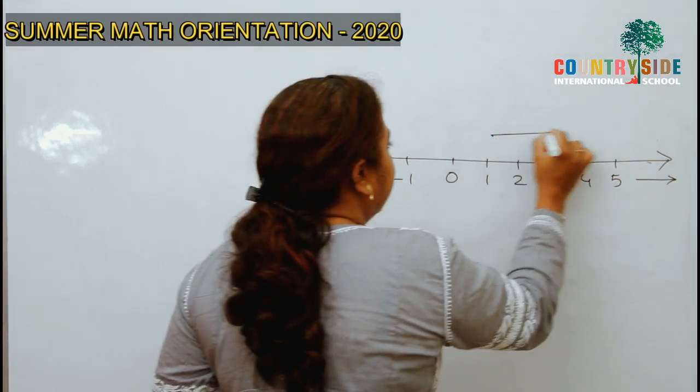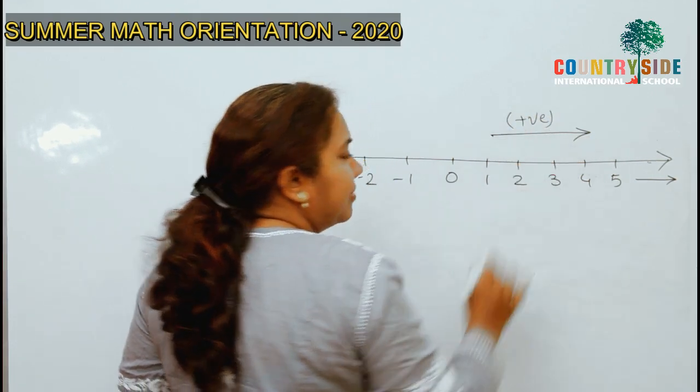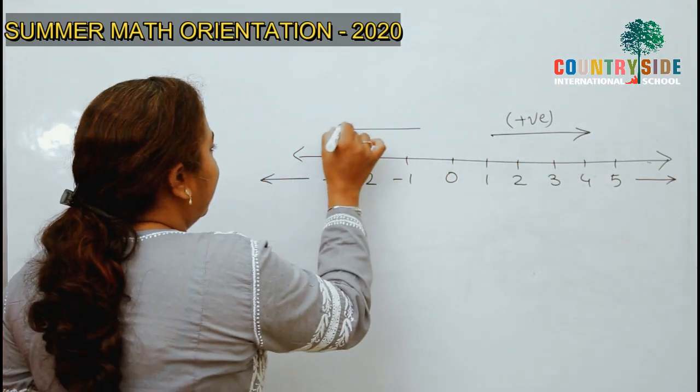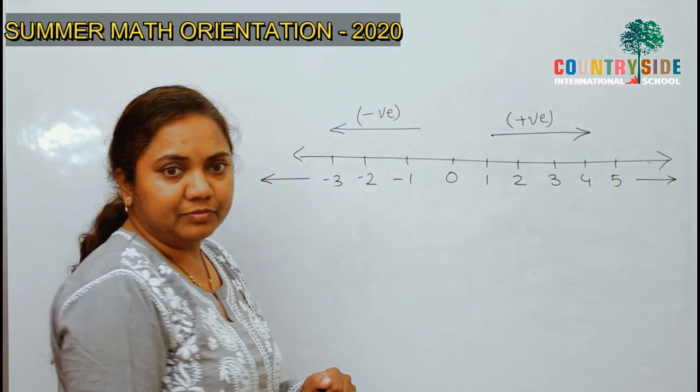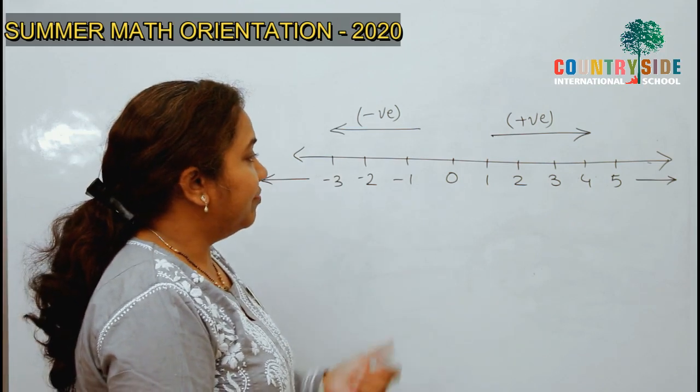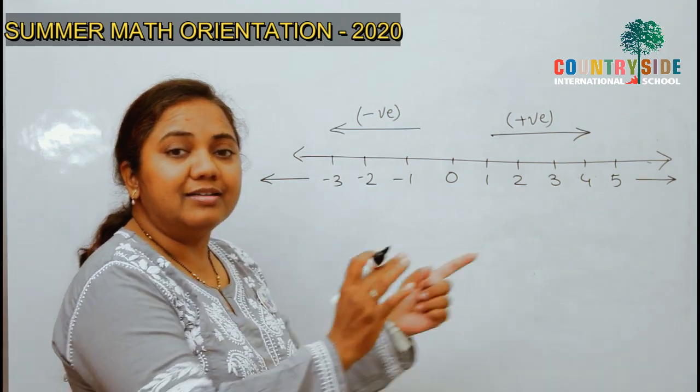You can see that on right side of 0, there are positive numbers and on left side of 0, there are negative numbers. Now, in number system, we will see how to segregate them in different number sets.